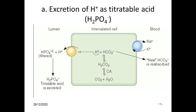In the diagram showing intercalated cells, the luminal side of the renal tubule and the blood side are illustrated. Hydrogen ions combine with phosphate, which is the metabolic end product, to form what is called titratable acid, which is excreted in urine. By this means, hydrogen ions are eliminated and a regular pH is maintained.